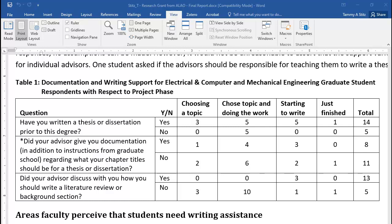The next two questions: did your advisor give you documentation in addition to instructions from graduate school regarding what your chapter titles should be for a thesis or dissertation? And did your advisor discuss with you how you should write a literature review or background section? Both of these are yes and no questions. Again, they're qualitative information.